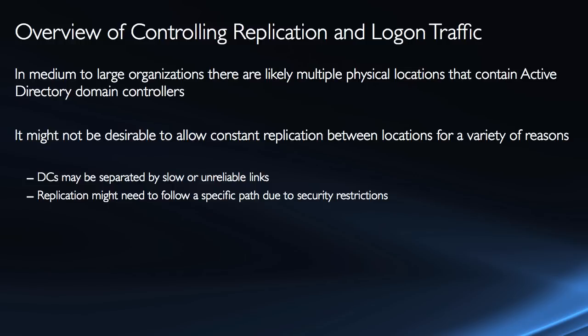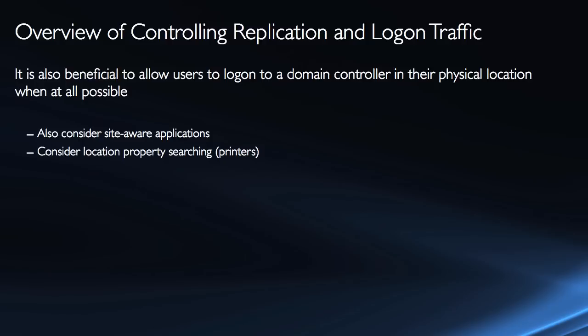It's possible that these are unreliable or slower links, and you don't want the domain controllers constantly communicating over them. It's also possible that it's just a slower link and I don't want to completely monopolize the bandwidth on that link with Active Directory replication. Or we might need to follow a specific path for replication due to security restrictions — meaning firewalls, the way that firewalls are configured, and who we're going to allow traffic between. It's also beneficial to allow users to log on to a domain controller in their physical location when at all possible, and we need to consider site-aware applications like DFS and Microsoft's Exchange messaging system.